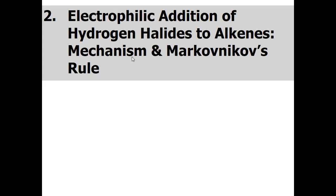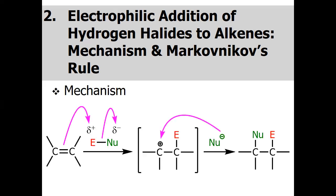Now let's discuss the electrophilic addition of hydrogen halides to alkenes, covering the mechanism and Markovnikov's rule. It is like the addition of an unsymmetrical reagent across the double bond: in the first step a carbocation is generated, and then nucleophilic addition on the carbocation gives the product. This is the common reaction we have already discussed.